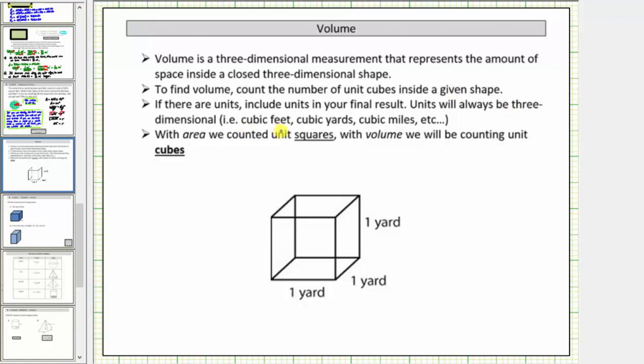For example, cubic feet, cubic yards, cubic miles, and so on. So remember with area we count unit squares, and with volume, we count unit cubes. Here's an example of a unit cube. This is one cubic yard.